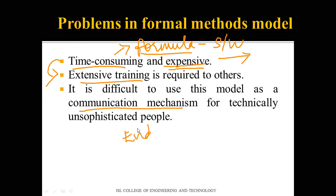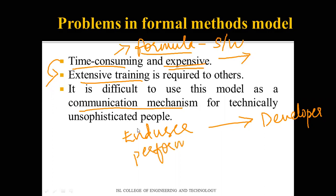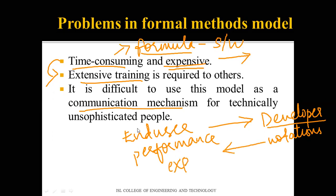Another problem is that it is difficult to use this model as a communication mechanism for technically unsophisticated people. For example, an end user requests high performance, but the developer — a skilled data scientist — uses complex notations and formulas that the end user cannot understand. This model cannot be used for communication between end users and developers when users lack background knowledge of the mathematical techniques involved.